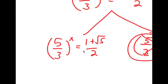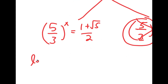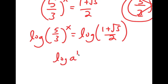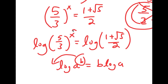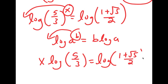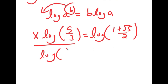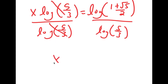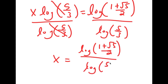For (5/3) to the power of x equal to (1 + √5) over 2, I'm going to take the log on both sides. So I have log of (5/3) to the power of x is equal to log of (1 + √5) over 2. Using the power rule, I can move x to the front, giving x times log(5/3) is equal to log((1 + √5)/2). Dividing both sides by log(5/3), these cancel out, and I get x is equal to log((1 + √5)/2) divided by log(5/3).